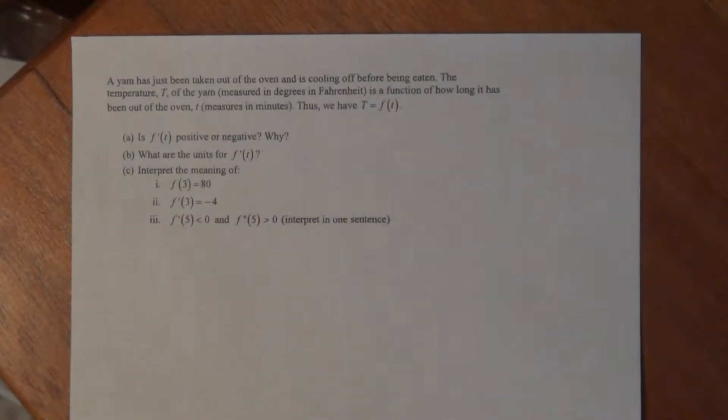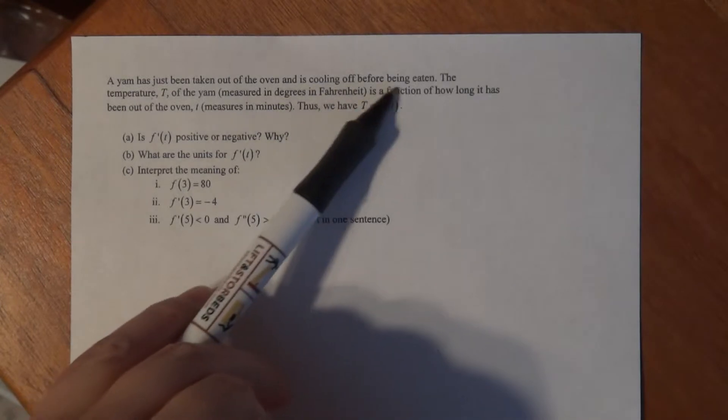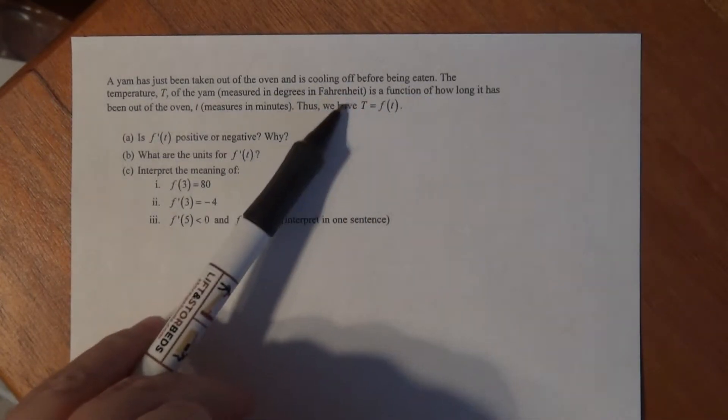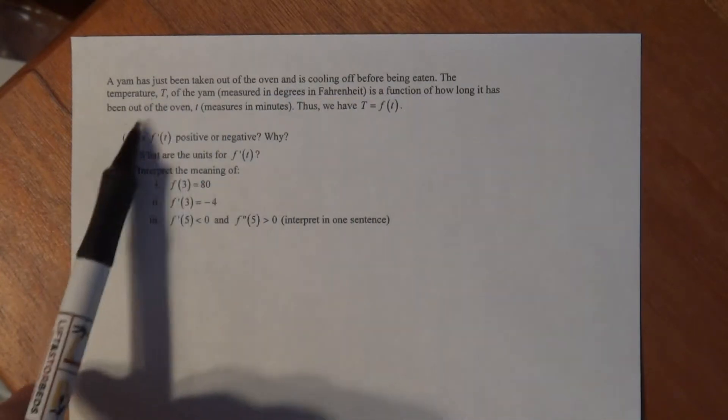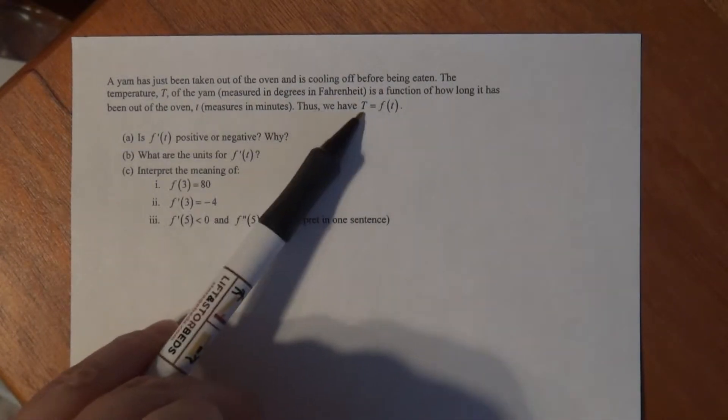This is a problem regarding interpretation of a situation where there's a derivative involved. We have a yam that's been taken out of the oven and is cooling off before being eaten. The temperature T of the yam, measured in degrees Fahrenheit, is a function of how long it has been out of the oven, measured in minutes t. Thus we have T equals F of t.